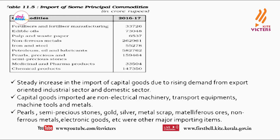After analysing table 11.5, we can understand that there was a steady increase in the import of capital goods due to rising demand from the export-oriented industrial sector and domestic sector. The capital goods imported include non-electrical machinery, transport equipment, machine tools and metals, pearls, semi-precious stones, gold, silver, metal scrap, metalliferous ores, non-ferrous metals, and electronic goods.